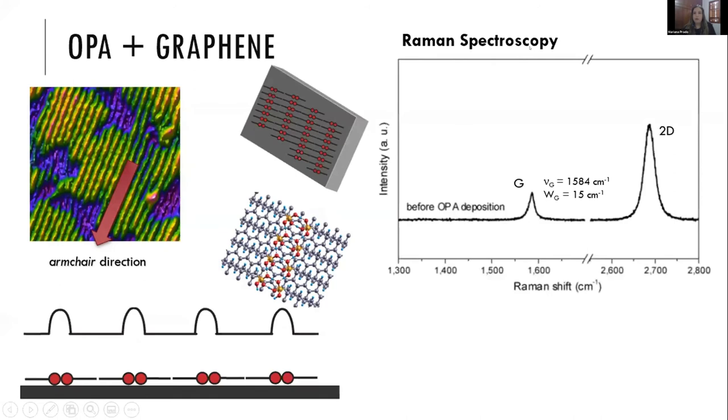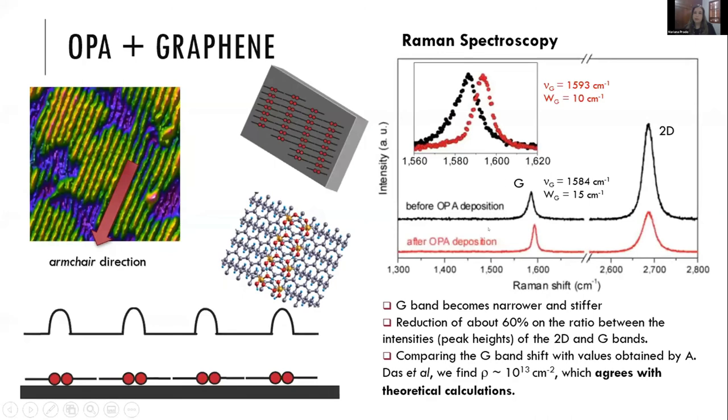Finally, we performed Raman spectroscopy on the single layer sample. Before deposition, we had single layer graphene with no defects. After deposition, we still see no defects. There is no chemical bond between the molecule and graphene, but we see changes in the G and 2D bands that agree with our theoretical calculations, indicating doping of graphene with the predicted charge density. We can use the molecule to control the Fermi level of graphene.